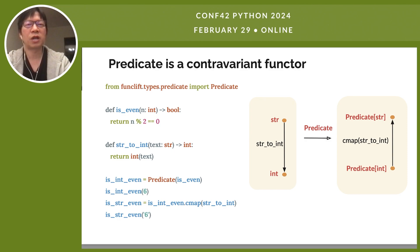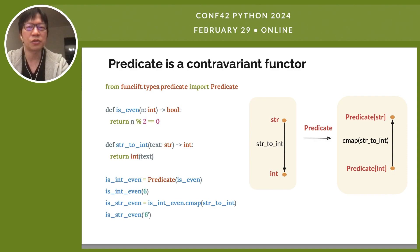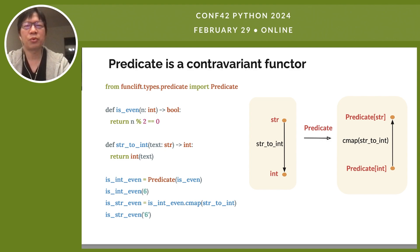Here's an example of a contravariant functor called predicate. A predicate is something that is either true or false. In our example, we first have a predicate that will be true if we give it an even integer. And as the diagram shows, we can use cmap to convert that predicate of int into a predicate of str. With the converted predicate, we can pass it the number 6 as a string, and it will tell us if that's an even number or not.